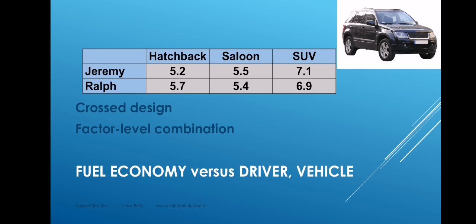In this first simple example, we will investigate the effect on fuel economy of the two factors: driver and vehicle. We represent the drivers in the rows of the table, so the rows represent factor one, and the vehicle in the columns of the table, so the columns represent factor two. Every cell in the table represents a combination of a certain driver with a certain vehicle. We call this a crossed design because every combination occurs — all the rows cross all of the columns.